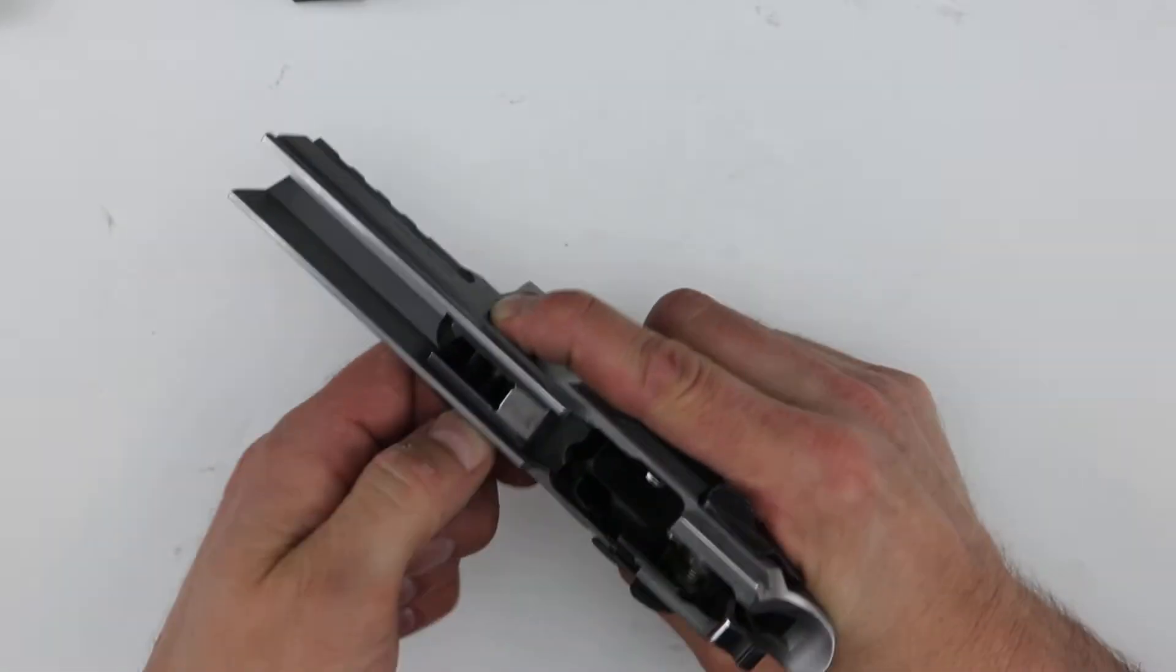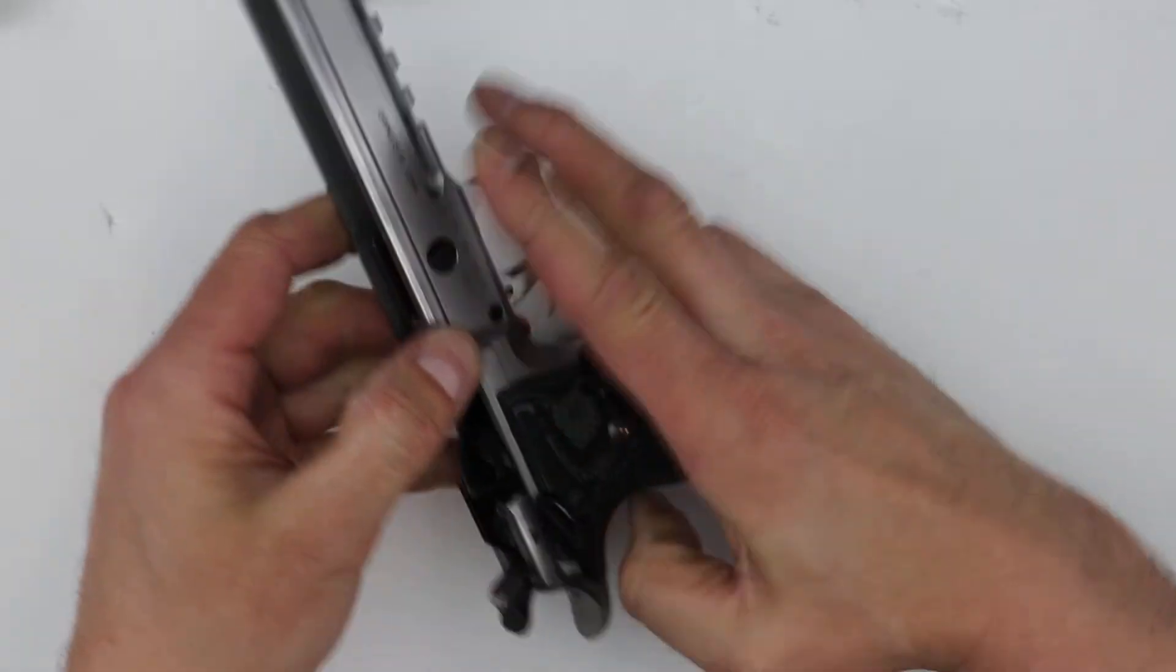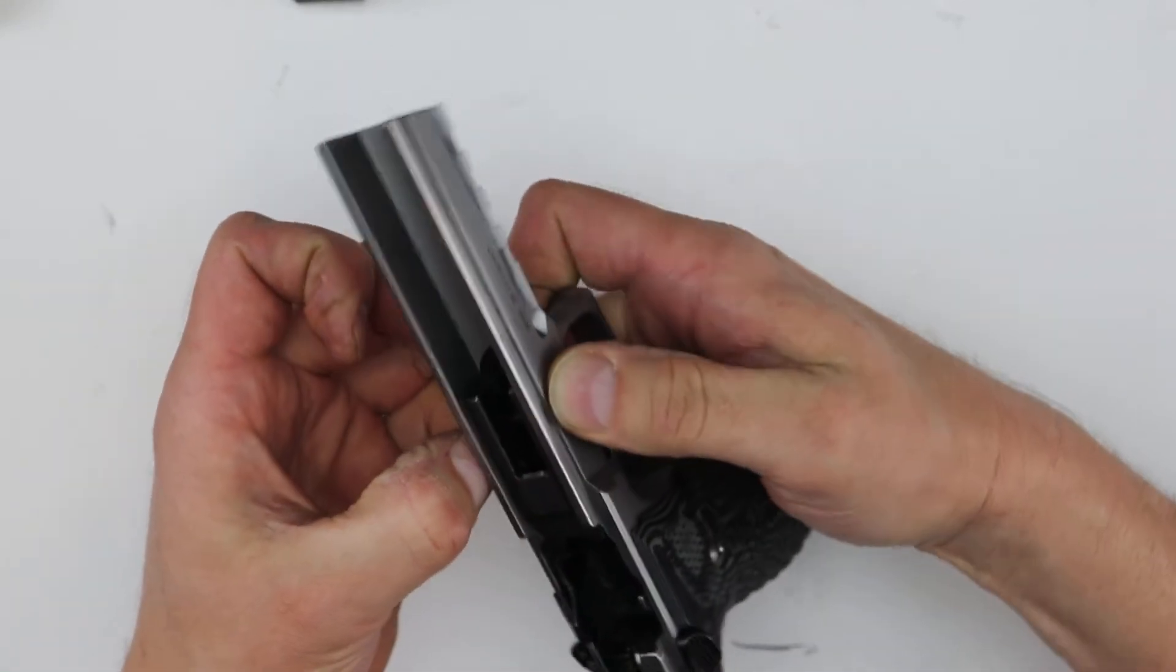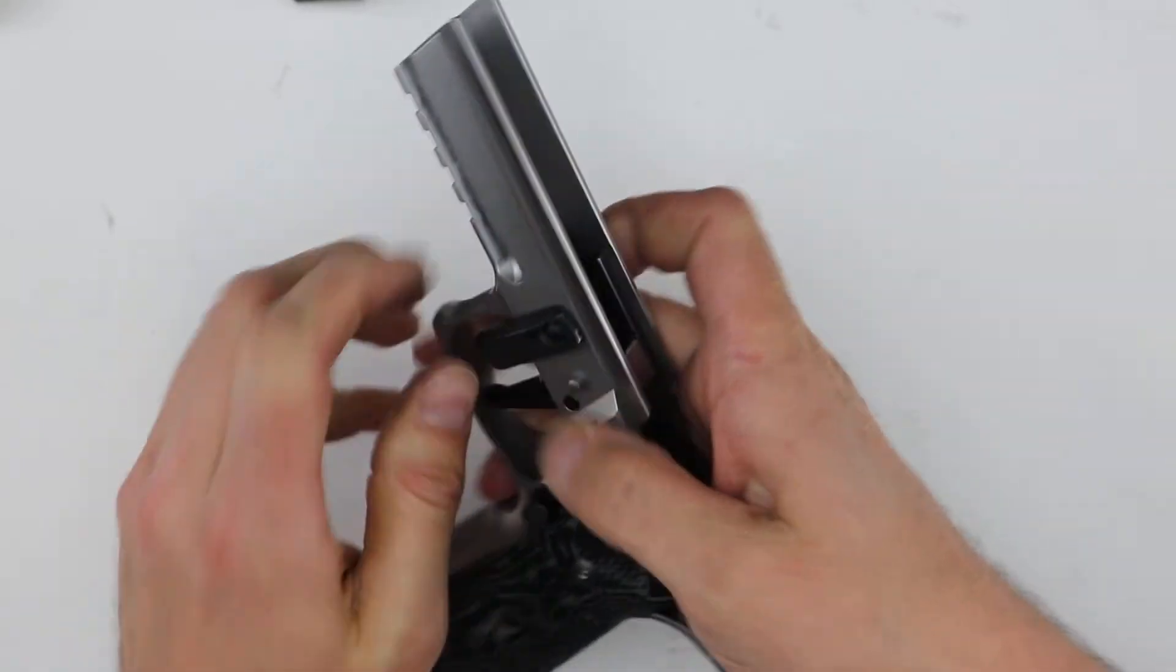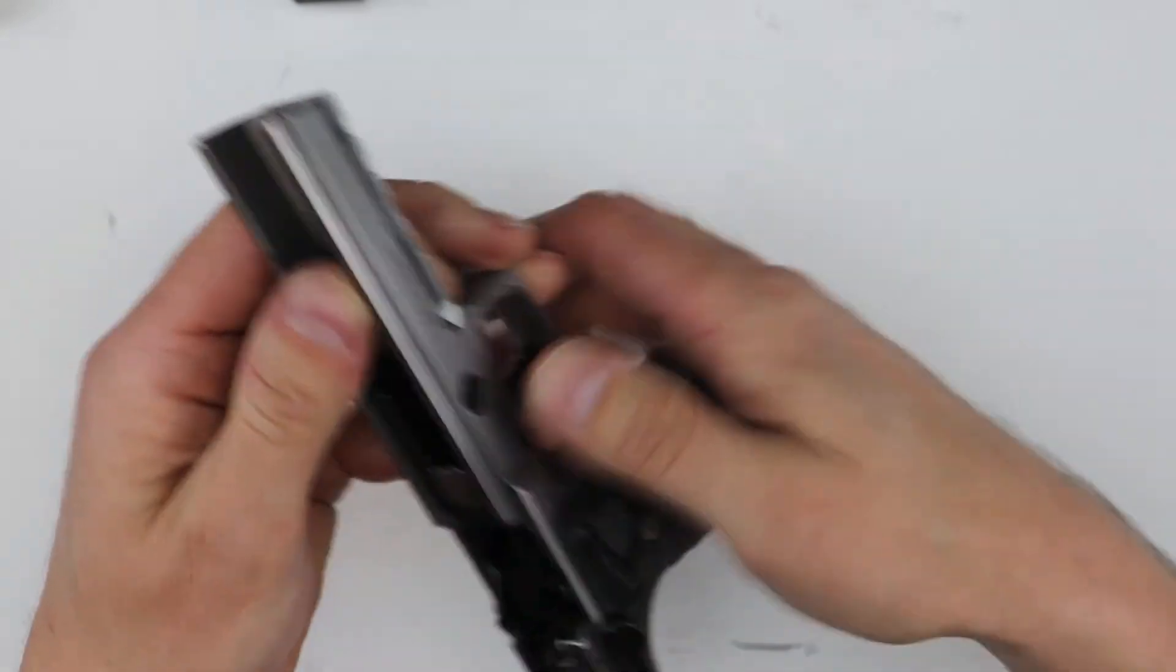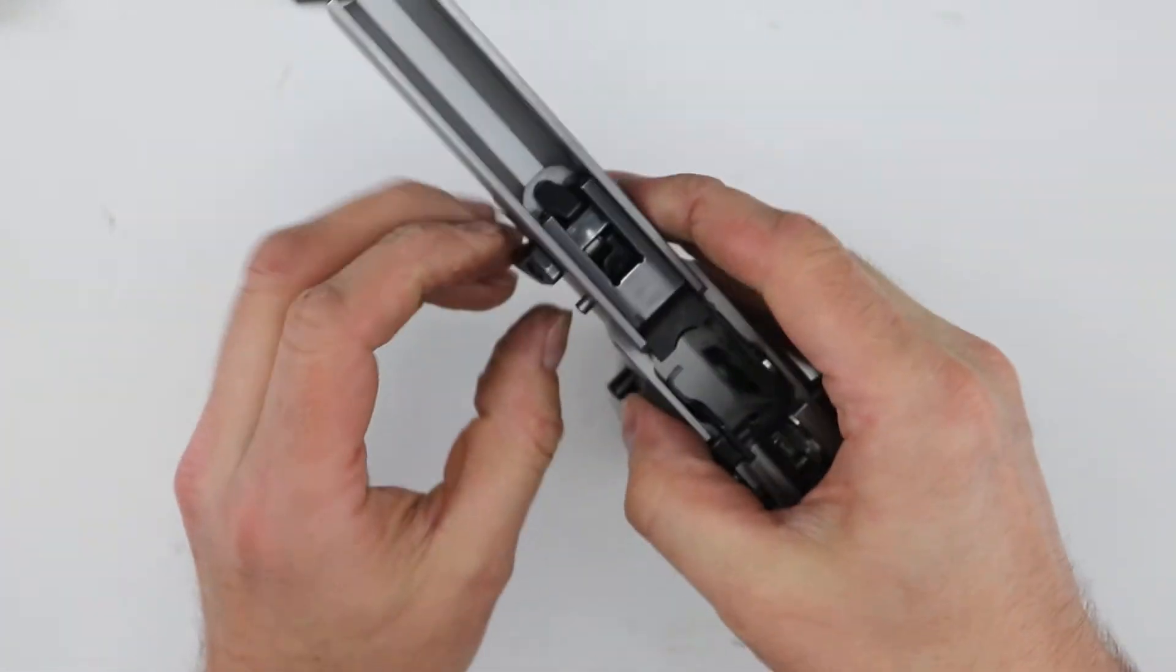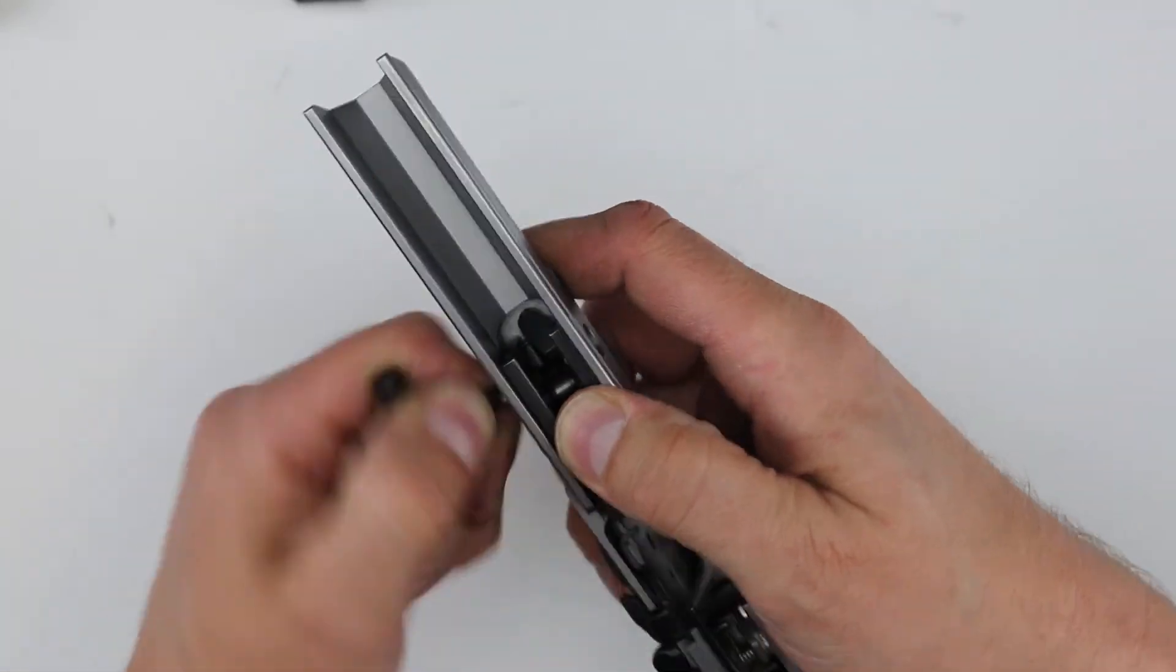Another thing I'll show you real quick since I got this apart: you think, oh, I want to pay all the money for an X5, are they really that different? Yes, they are. One of the things is of course the trigger. It's got the pre-travel, the post-travel, and the trigger weight. You kind of wonder what type of trigger does it have compared to like a regular 226 or 220, and I'll show you that.